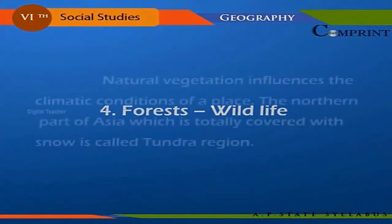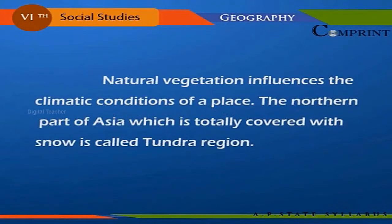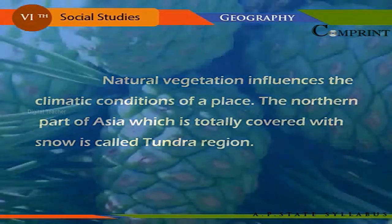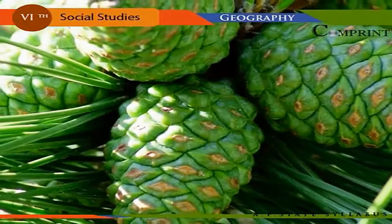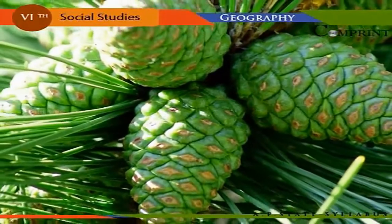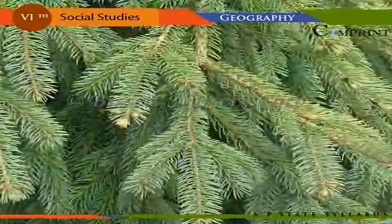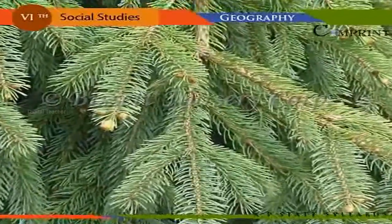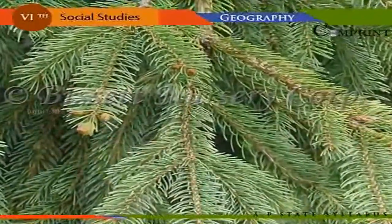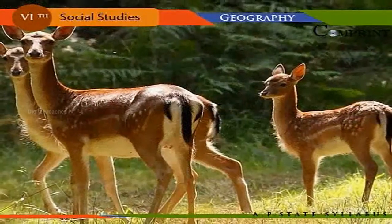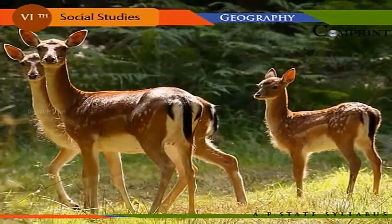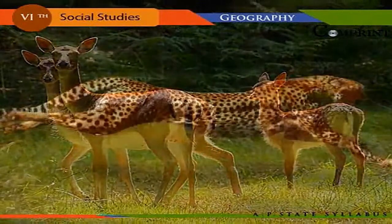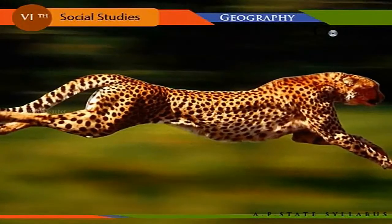Natural vegetation influences the climatic conditions of a place. The northern part of Asia, which is totally covered with snow, is called the tundra region. In the taiga region, we find coniferous forests — pine, fir, spruce, larches, and birch are the important trees that grow here. The southern grasslands of the taiga are called steppes. Deer, camels, donkeys, and cheetahs are found in these grasslands.